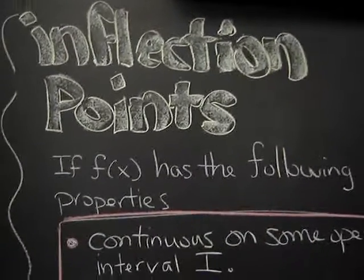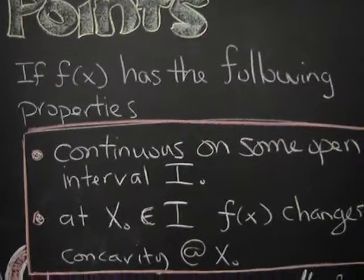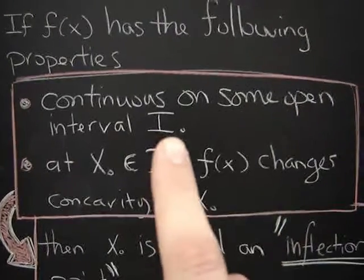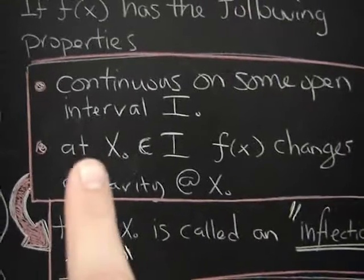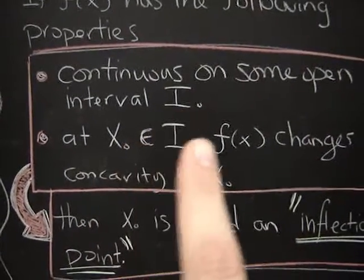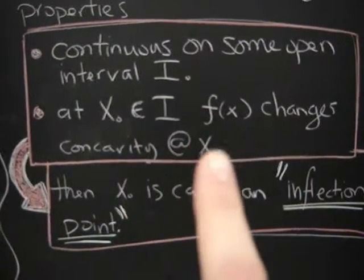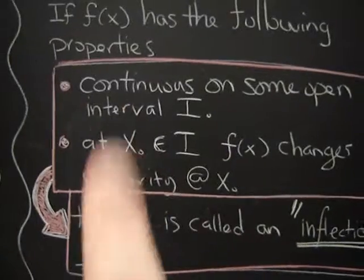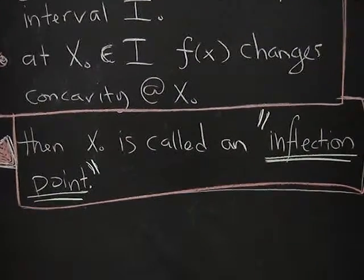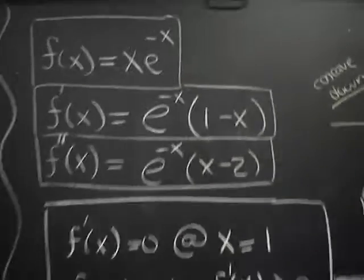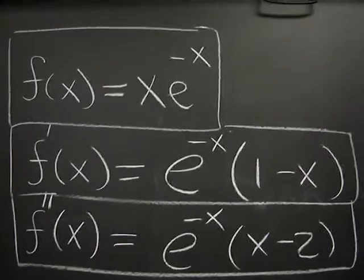Next topic: inflection points. If a function has the following properties — number one, continuous on some open interval I, and at some point x₀ in that interval the function changes concavity at that point — if those two things happen, then x₀ is called an inflection point. I've taken an example for all three parts of this lesson using the function f(x) = xe^(-x).